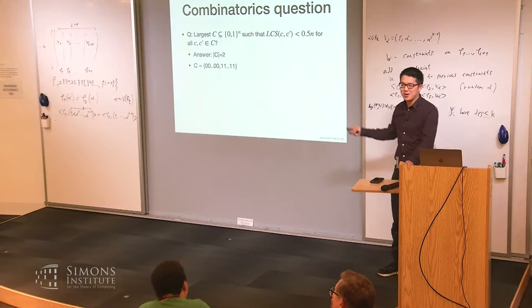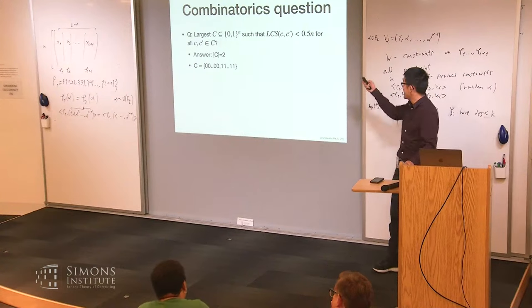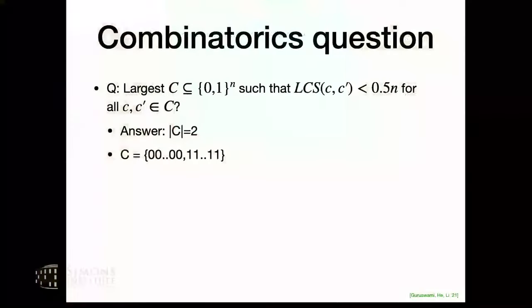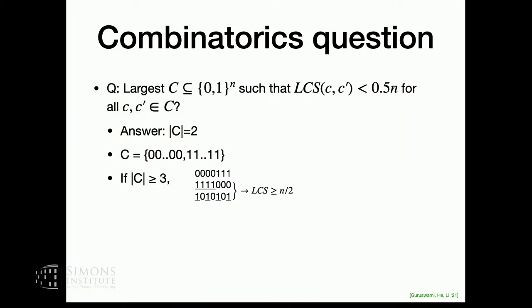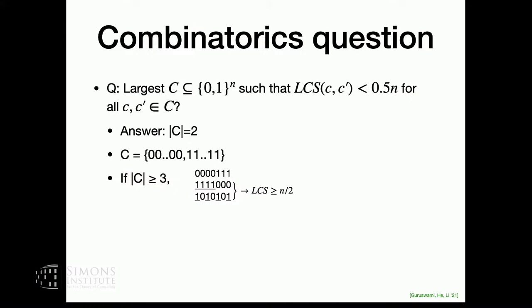It is two, yes. The answer is two. You can take the all-zero string and the all-one string, and these have LCS zero, so it certainly satisfies the requirements. And if you have three strings, then there are two strings which have at least as many ones as zeros — the same majority bits — so their LCS is n over two. Note that LCS is not necessarily consecutive.